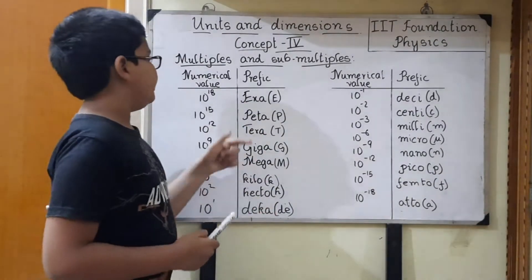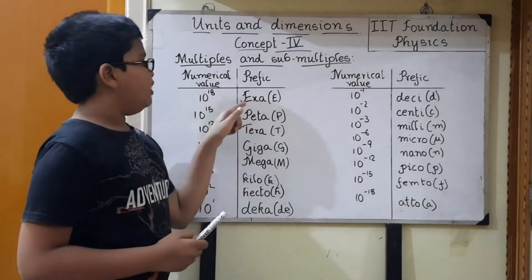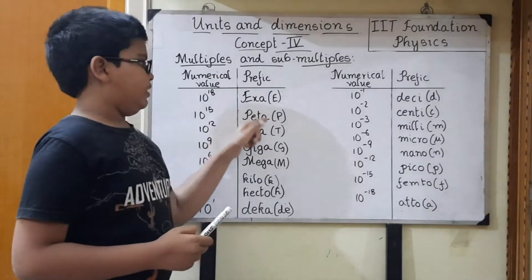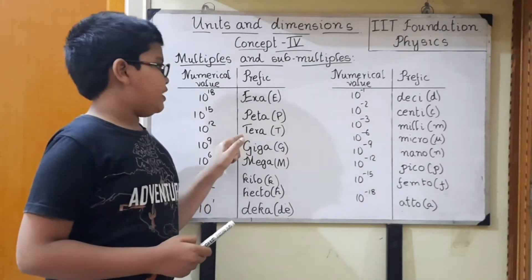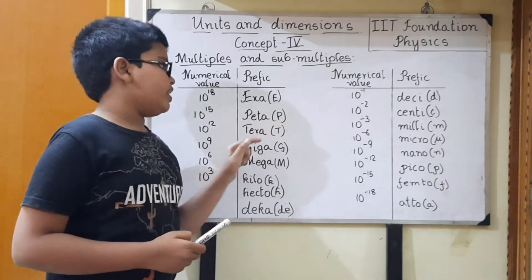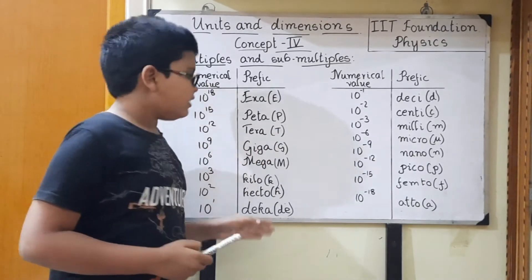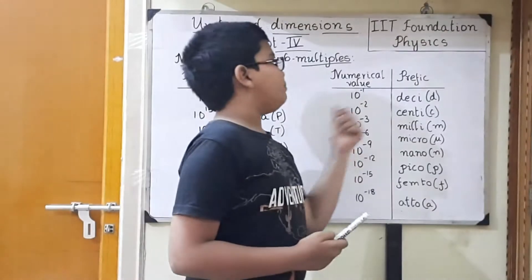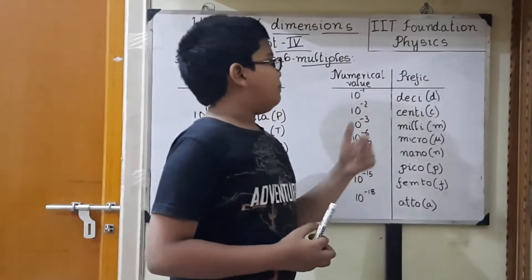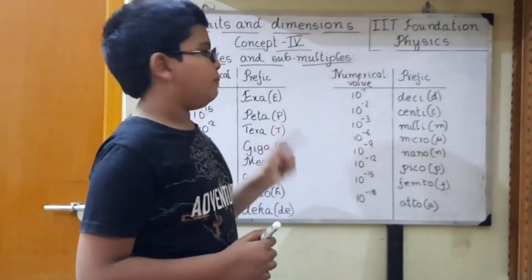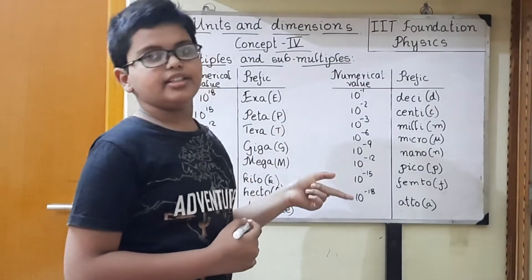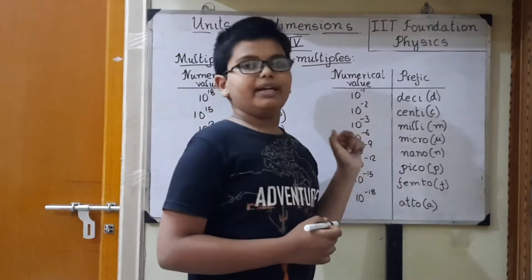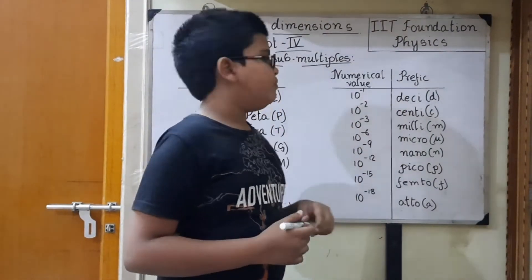These are the symbols for these prefixes. The symbol for exa is capital E, peta is capital P, tera is capital T, giga is capital G — like that. Next are sub-multiples. 10 power minus 1 is 1 by 10 power 1, which is 10. So 10 power minus 1 meter equals 1 decimeter.